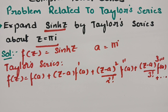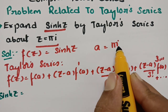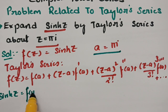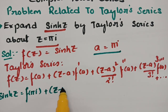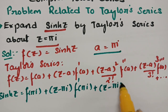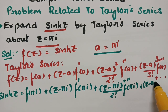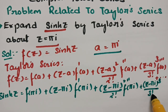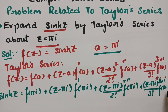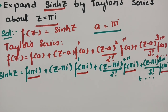If we substitute f(z) as sinh(z) and a = πi, then sinh(z) = f(πi) + (z - πi)·f'(πi) + (z - πi)²/2! · f''(πi) + (z - πi)³/3! · f'''(πi) + and so on. So we need the values of f(πi), f'(πi), f''(πi), and f'''(πi).